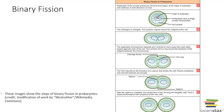Unicellular prokaryotes also need to replicate — a process called binary fission. They first replicate their circular DNA, which splits and unwinds to form two circular copies. FTSZ proteins migrate toward the middle of the cell and form a ring, similar to the actin ring in animal cells, causing the cell to pinch inward. This forms a septum or wall between the cells, and two genetically identical daughter cells are produced.